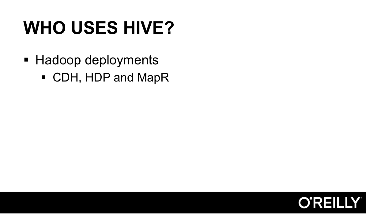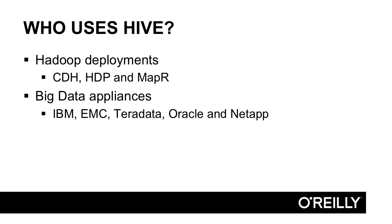Who uses Apache Hive? Typically, Hive is going to be deployed with a Hadoop deployment — this is where it was developed and where it works best. If you're deploying Cloudera's distribution for Apache Hadoop, the Hortonworks data platform, or MapR's distribution for Apache Hadoop, you will have Hive available to you. Big data appliances that come with Hadoop pre-configured, such as IBM's, EMC's, Teradata's, Oracle's, or NetApp's, will all come with Hive available.